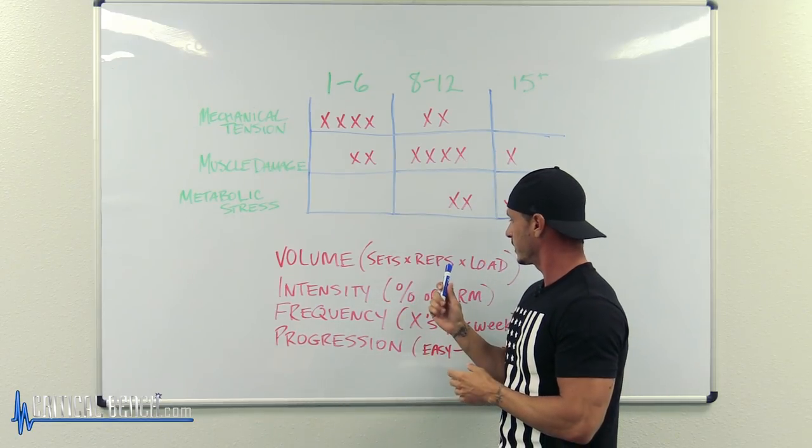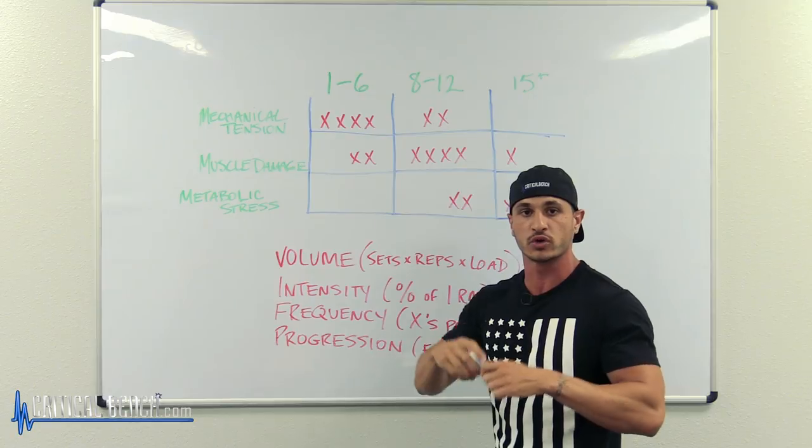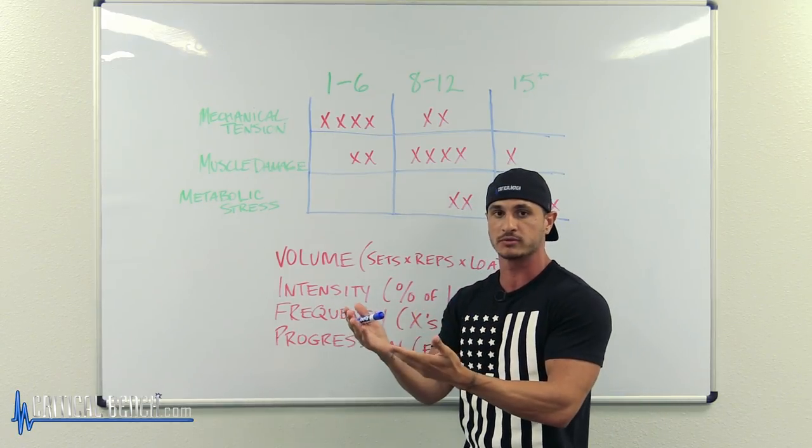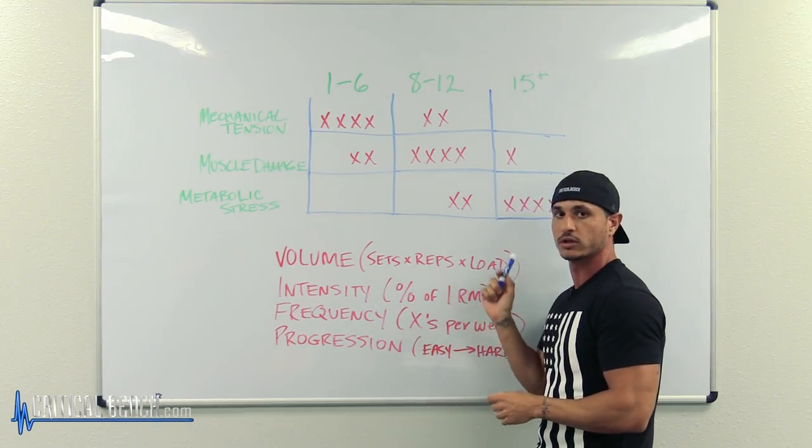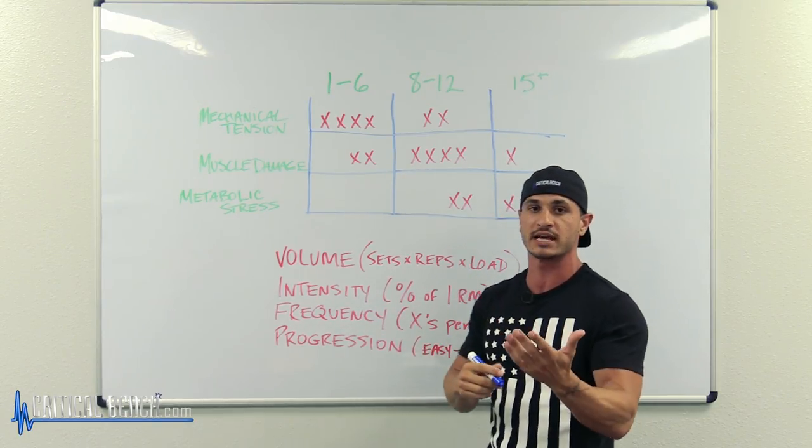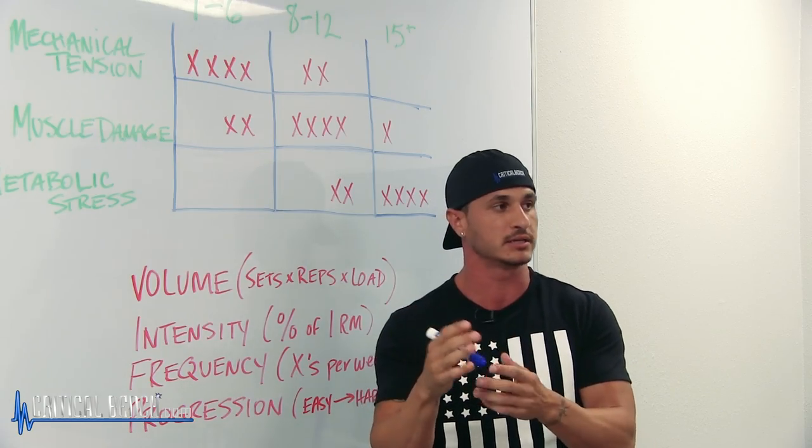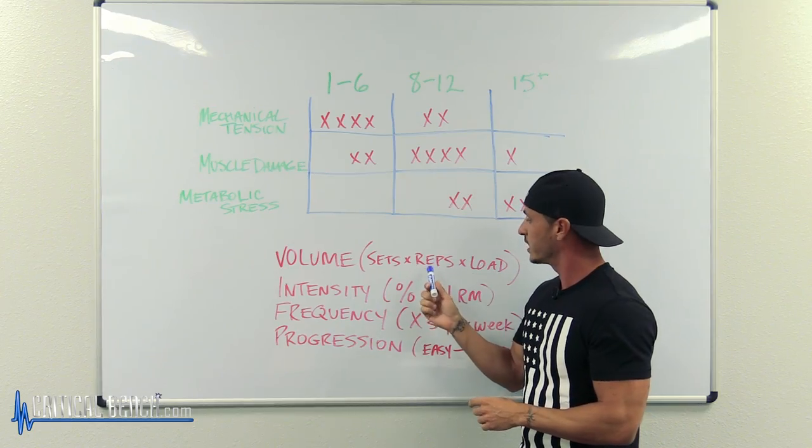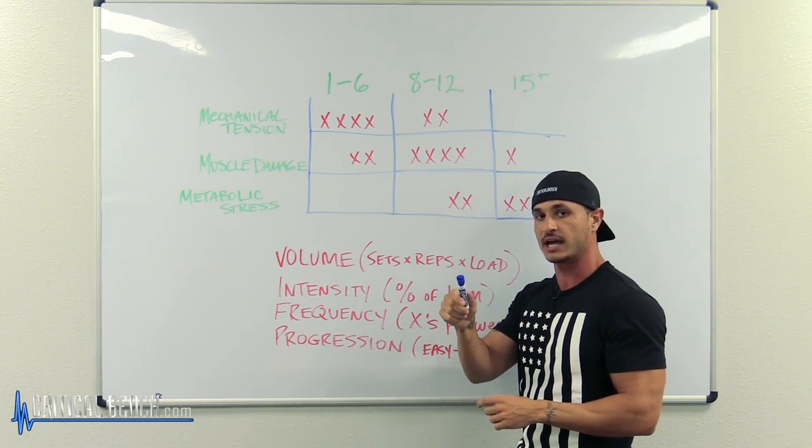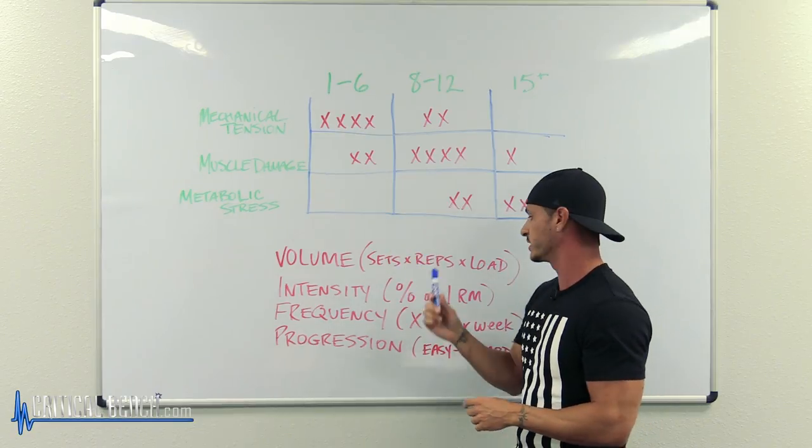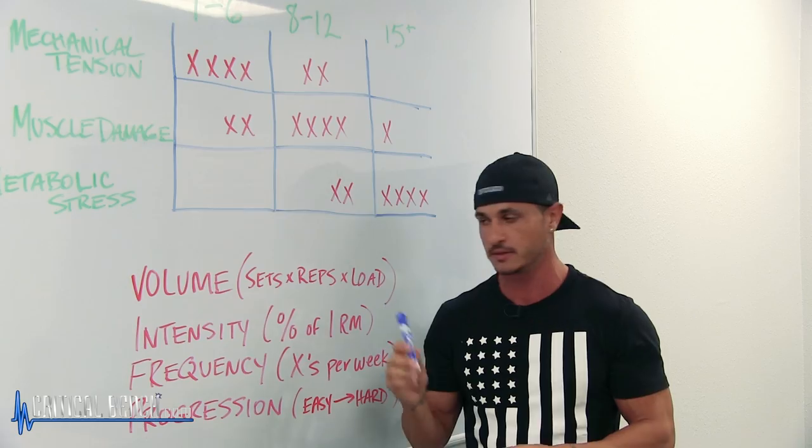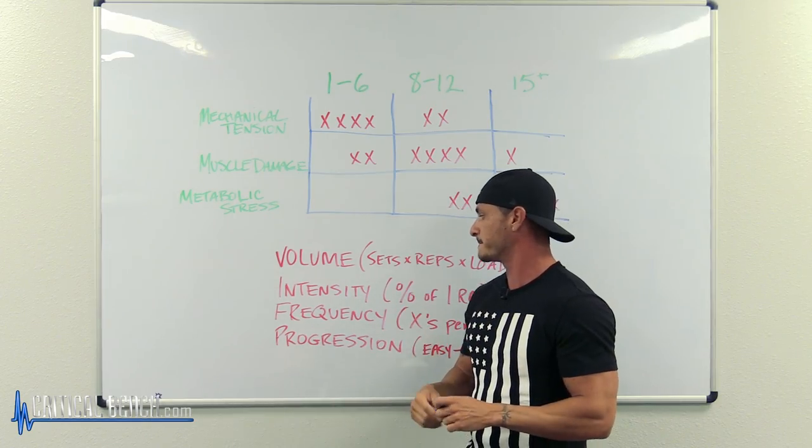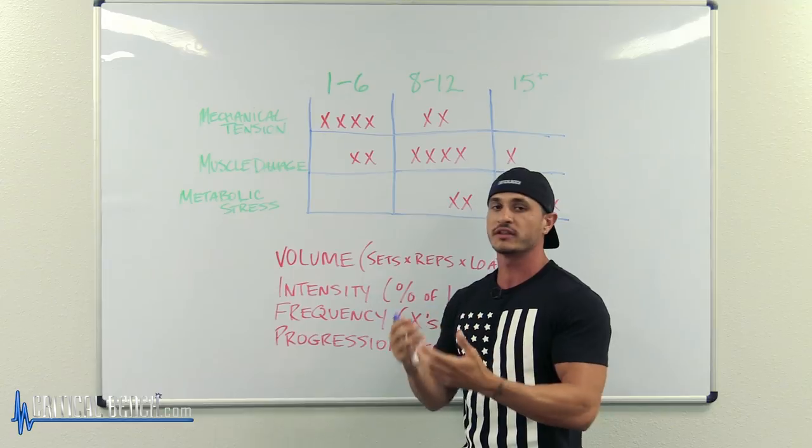So that kind of determines whether we're training for strength, hypertrophy, endurance, and so forth. And it also adds to the total load. So if you're doing 4 sets of 10 with 100 pounds, that's going to dictate your total load. Now you do 4 sets of 12, same weight, the load is going to increase. If we do 4 sets of 10 with 105, again the load is going to increase.